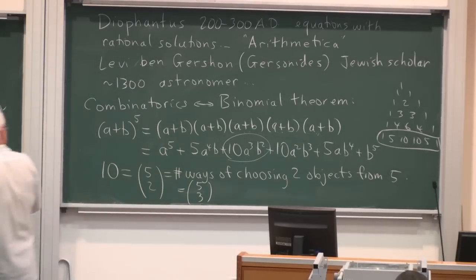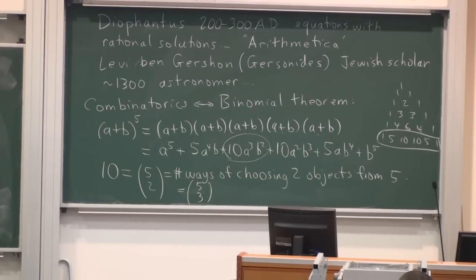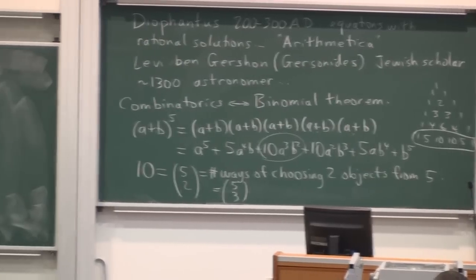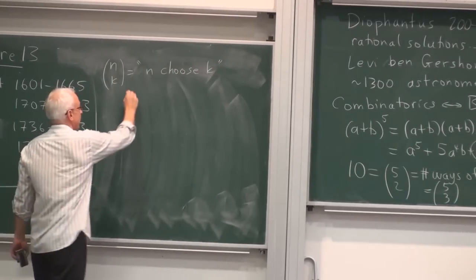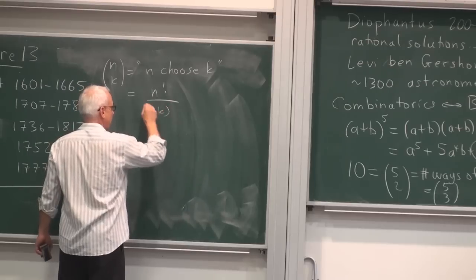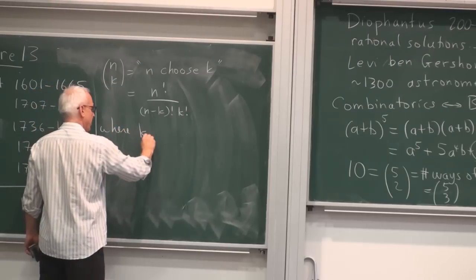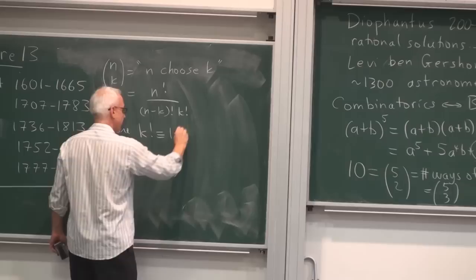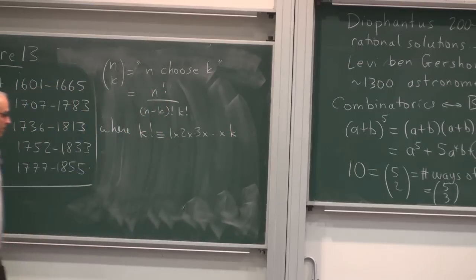And those correspond to the various sums that contribute to this total here. So this 10, which has nowadays the symbol five choose two, it's the number of ways of choosing two objects from a collection of five. And because it's symmetrical with respect to the a's and b's, we could also say it's the number of ways of choosing three a's. So it's the same thing as the number of ways of choosing three a's out of a total of five.